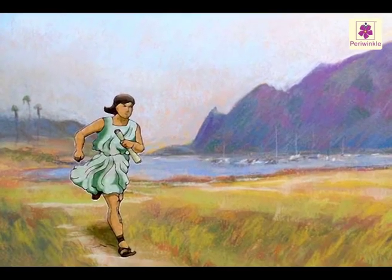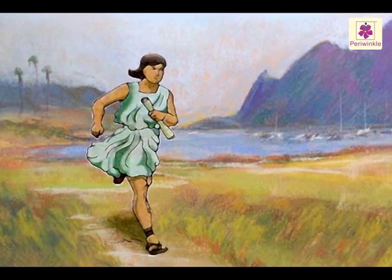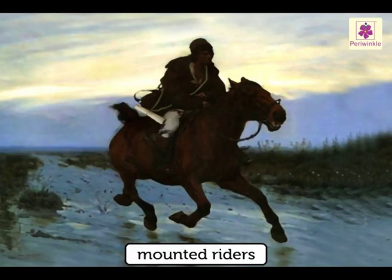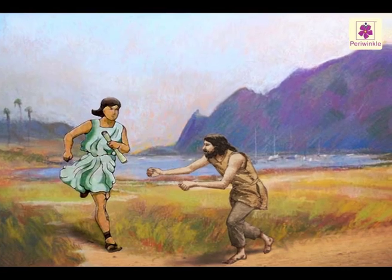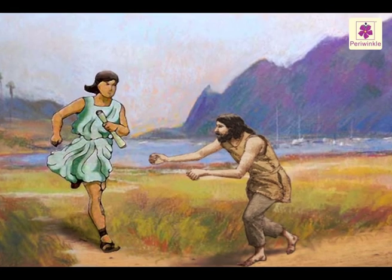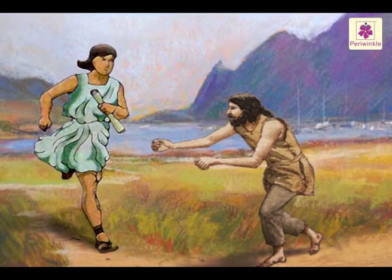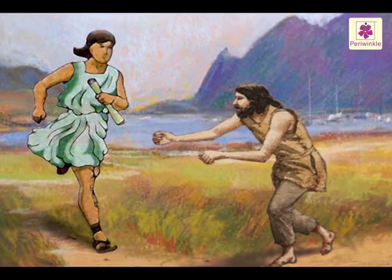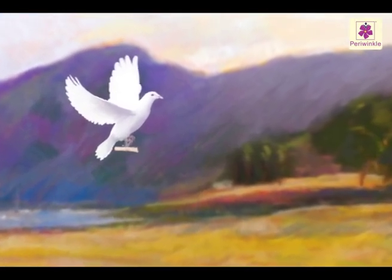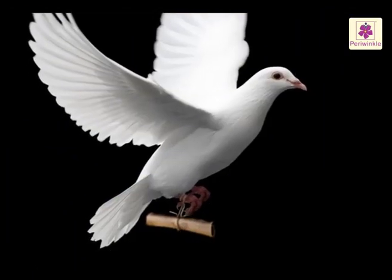In ancient times, the postal system was a relay system carried out by runners or mounted riders. If the distance was long, the runner or the rider would go to a certain point, and from there the letter would be carried by another runner or rider.